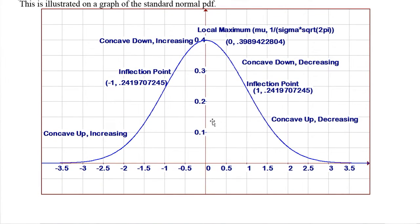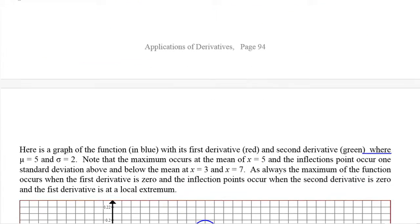This is illustrated on the graph of the standard normal. We see concave up and increasing, then an inflection point at μ minus one standard deviation. It switches to concave down but still increasing to the local maximum at x = μ. Then decreasing concave down to the inflection point at μ+σ, and from there decreasing concave up with an asymptote. That's what gives the bell-shaped curve.